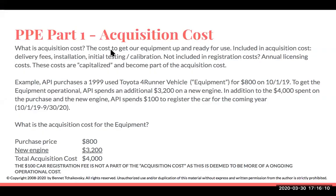So let's talk about some of the important concepts in terms of property, plant, and equipment. The first one is acquisition cost, which is the cost to get our equipment up and ready for use. Included in acquisition costs are delivery fees, installation, and any initial testing or calibration. The key is: what do we need to do to get the equipment up and running? We are not going to be including registration, gasoline, or annual licensing costs — those are operating costs which will be immediately expensed. We capitalize the costs to buy the equipment and to get it up and ready for use.